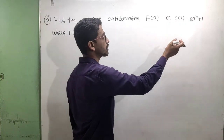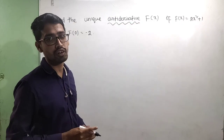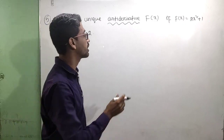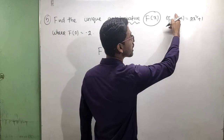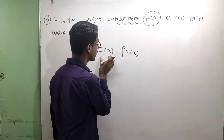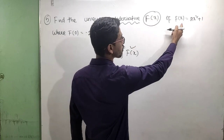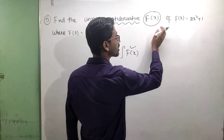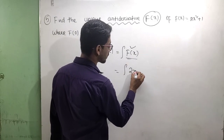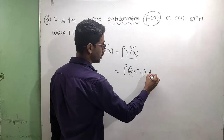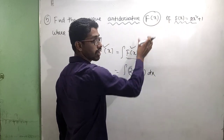The next question: the antiderivative F of x, where f of x equals 2x square plus one and f of zero equals minus two. Antiderivative means we need to find the integration. So F of x equals the integration of f of x dx, which means integration of 2x square plus one dx. We consider capital F of x as our antiderivative.